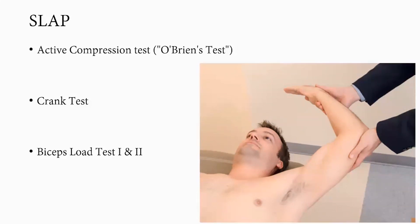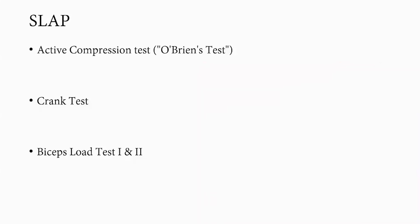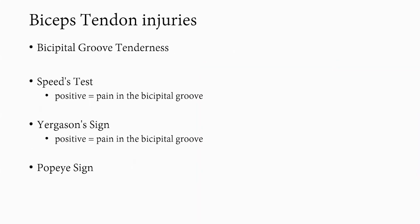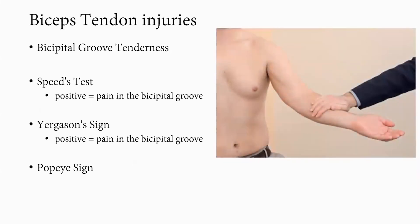Biceps tendon injuries can be examined by bicipital groove tenderness. The Speed test — with elbow extended and shoulder elevated against resistance — is positive if pain occurs in the bicipital groove. Yergason's sign involves bicipital groove pain with resisted supination of the forearm with the elbow in 90 degrees of flexion.